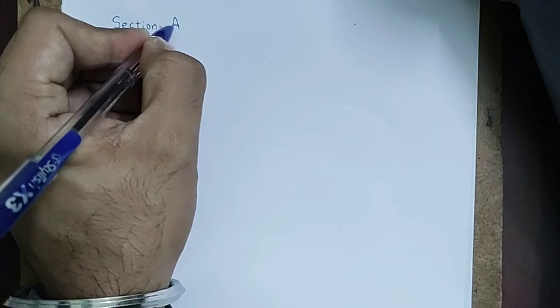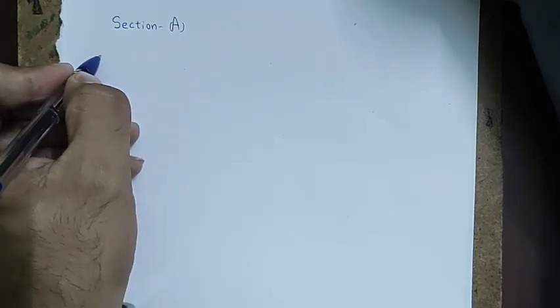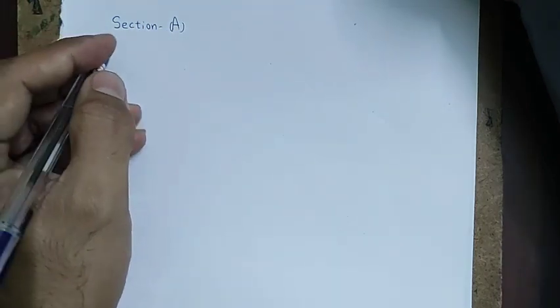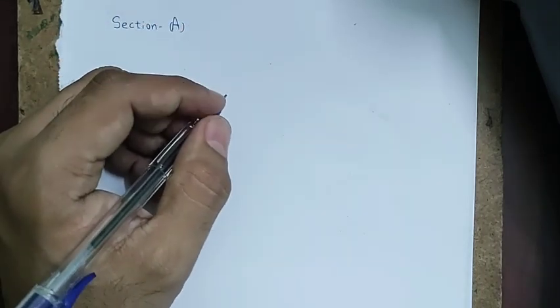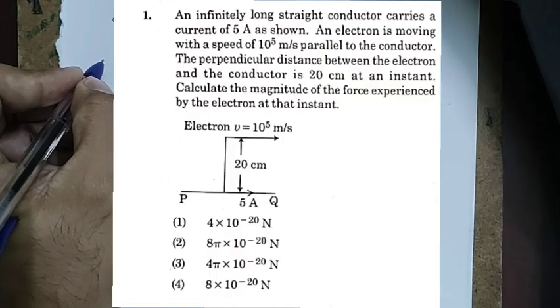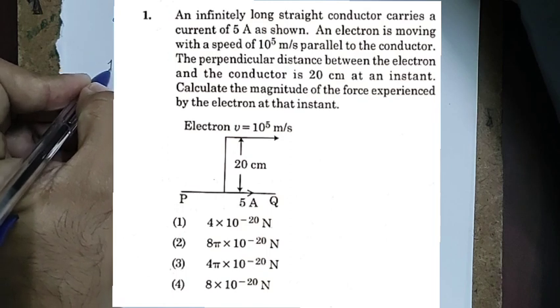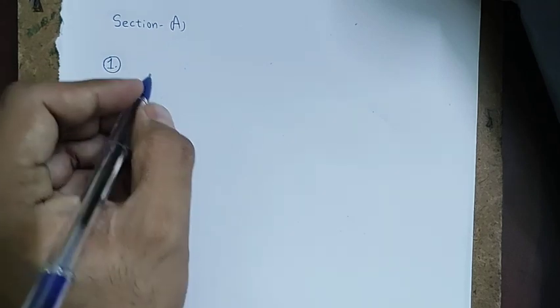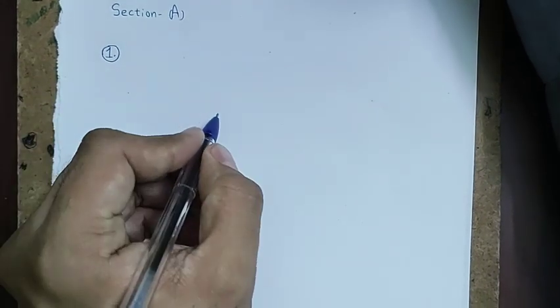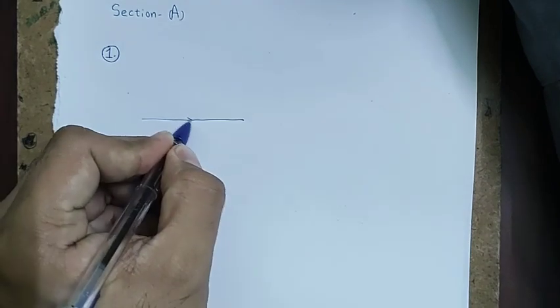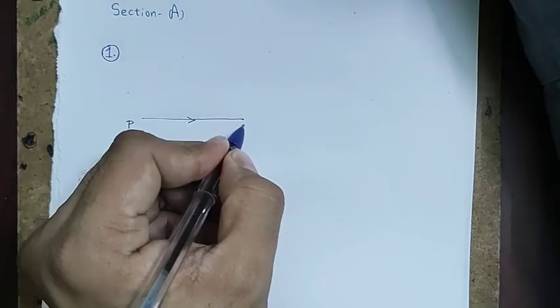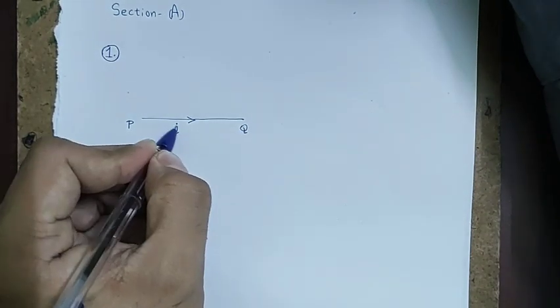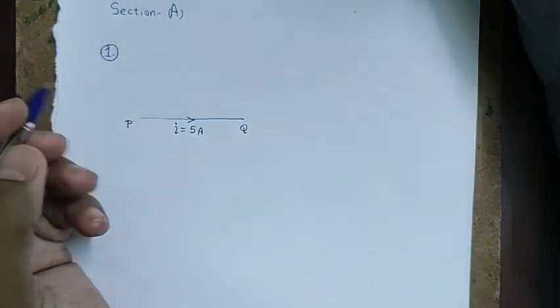We are going to discuss Section A of the NEET 2021 paper first. In Section A there were 35 questions. Now look at the first question on your screen. In this question there is a PQ wire, which is an infinitely long wire carrying a current of 5 ampere.